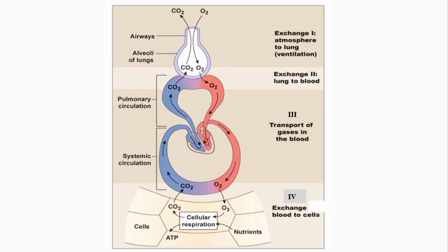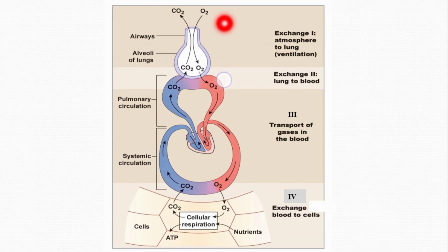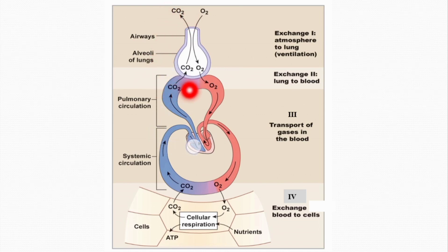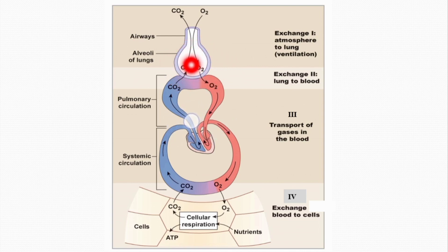Respiration consists of four steps. The first step is exchange of gases between the atmosphere and our lungs — oxygen comes from the atmosphere to the lungs, especially to the alveoli, and carbon dioxide moves in the reverse direction from lungs to the atmosphere. The second step is the exchange of gases which occurs in the lungs: oxygen moves from the alveoli to the blood and carbon dioxide moves from the blood to the alveoli.